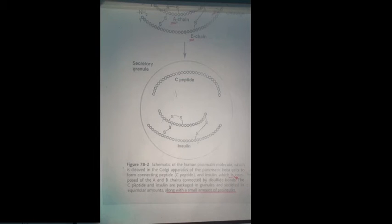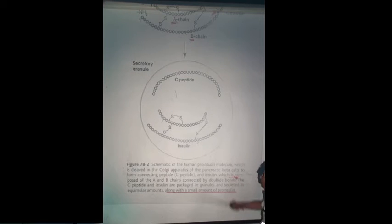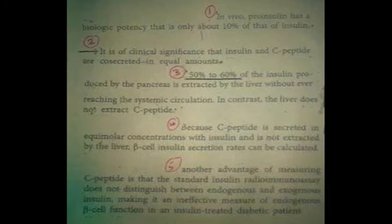We don't know the function of this bridge. When the insulin is secreted along with the C-peptide in the secretory granules, the C-peptide and insulin are packed in granules and secreted in equimolar amounts, along with a small amount of proinsulin. These points are very important. First, in vivo, proinsulin has biologic potential that is only about 10% of that of insulin. Second, it is clinically significant that insulin and C-peptide are secreted in equal amounts.